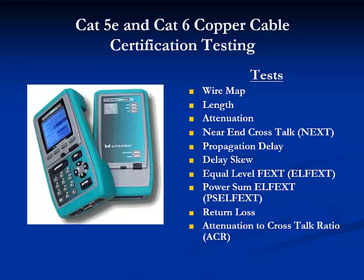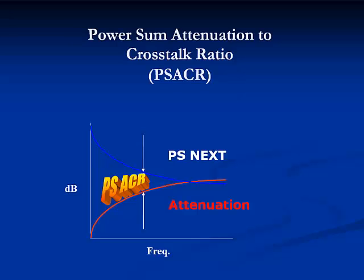Certification performance testing of Category 5E and Category 6 copper UTP cabling involves sophisticated cabling test instruments to perform the following tests: wire map to check connections, length, attenuation, near-end crosstalk, propagation delay, delay skew, equal-level far-end crosstalk, power sum equal-level far-end crosstalk, return loss, and attenuation to crosstalk ratio. There are four other tests I'll be talking about later as well. Power sum ACR — or power sum attenuation to crosstalk ratio — is ultimately the best measure of performance capability in copper cabling. The cable performance must operate between the power sum near-end crosstalk curve and the attenuation curve, and it is also a function of frequency.